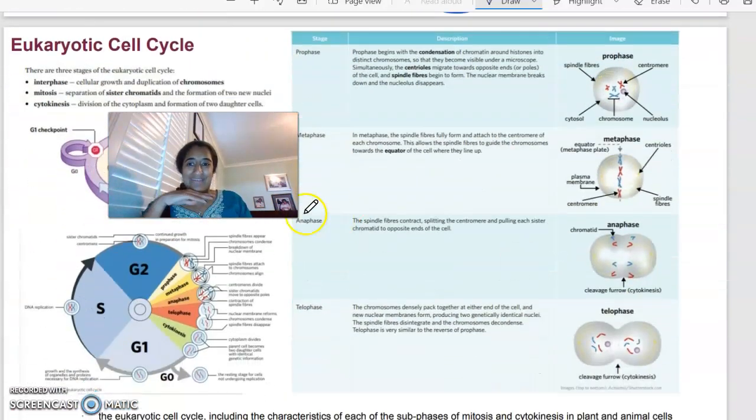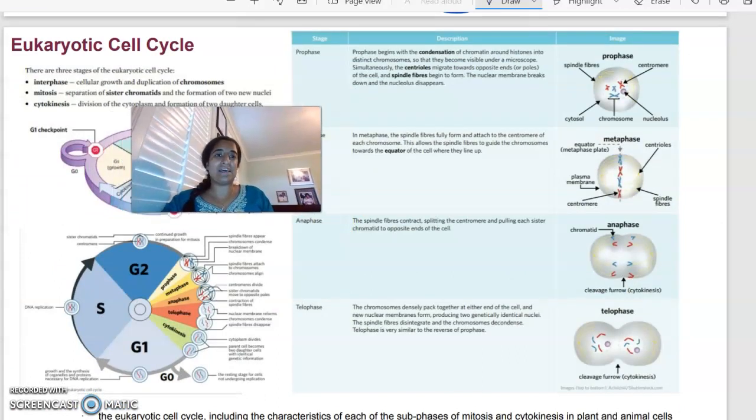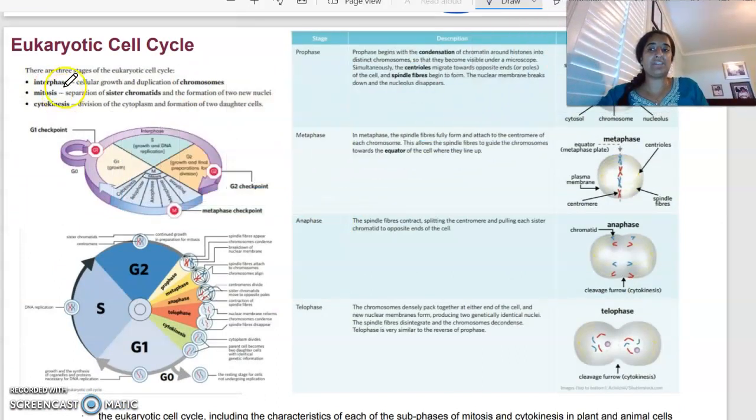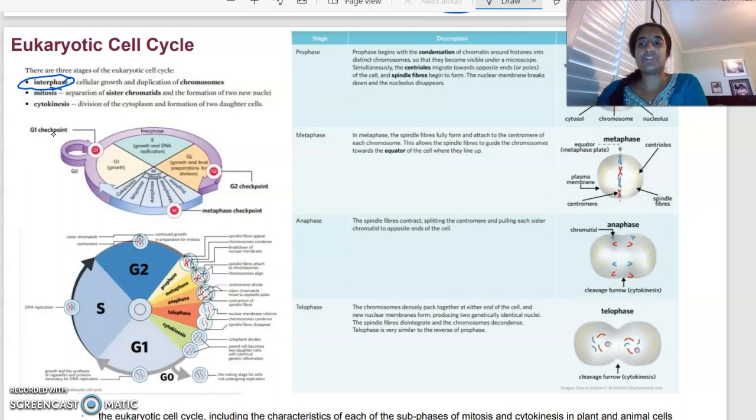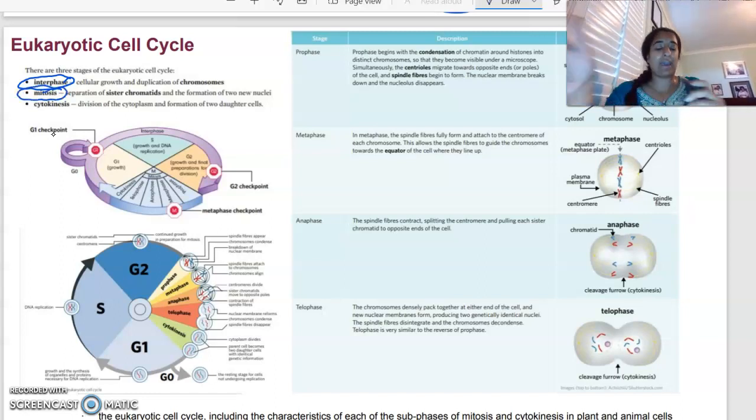The eukaryotic cell cycle, however, is a lot more complex. So the cell cycle for eukaryotes can be split into three major stages. The first stage is called interphase. And this is basically where all the cell growth and replication of the DNA is happening. The second stage is what we call mitosis. And this is where the actual cell division is happening.